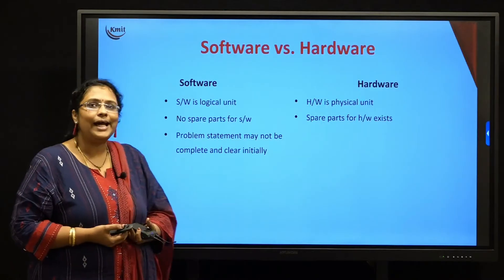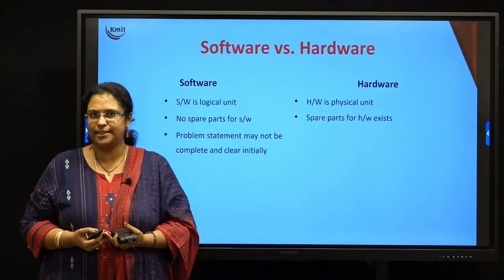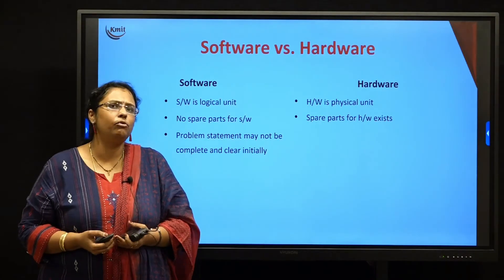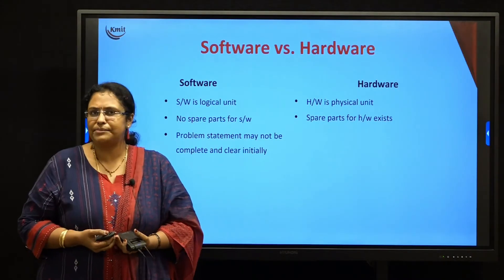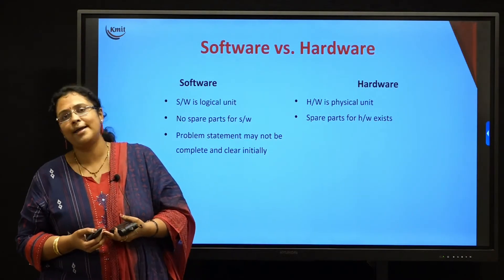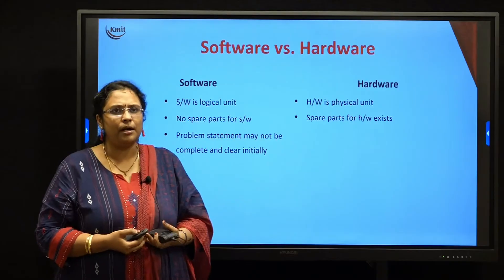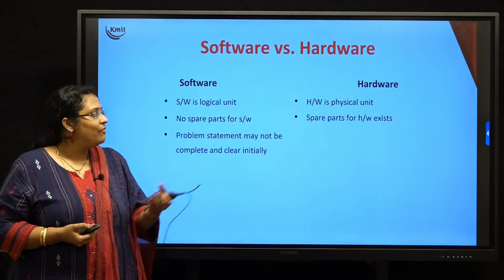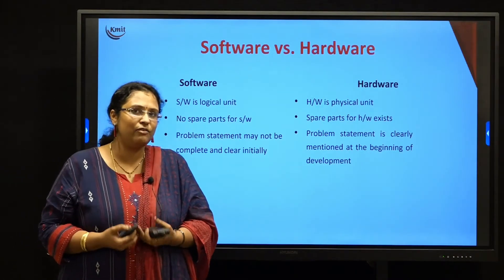In software, the problem statement may not be complete and clear initially. For example, if you go to a company to develop a website for your grocery site and tell them the background should be blue, after a few days the company comes up with a prototype. When you look at that prototype, you might feel the blue color is not matching, and you can tell the company at that moment that you want pink instead. So in software development, in the initial stage itself, you need not have a clear picture of what you want to develop.